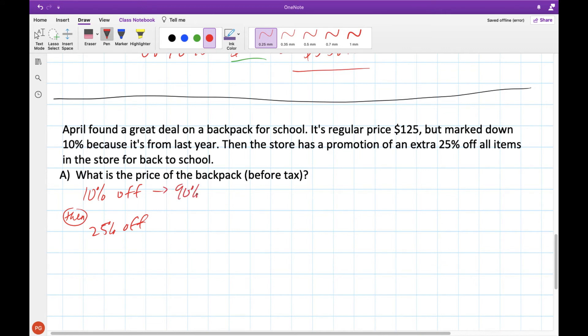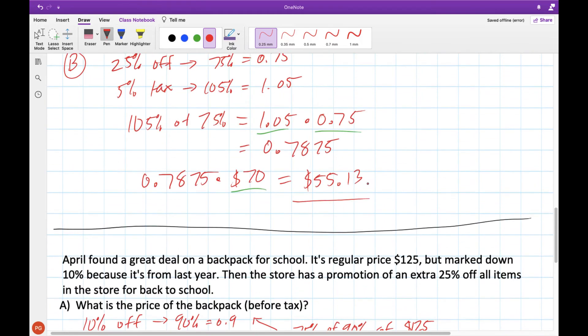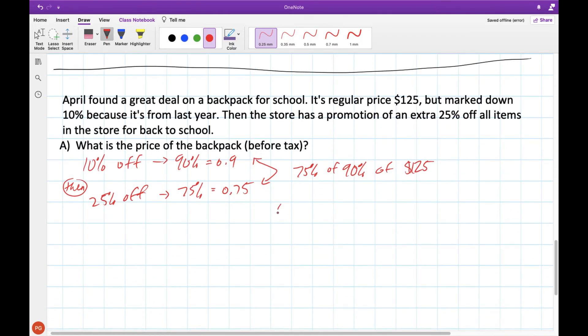10% off, that's like paying 90%, which is the same as 0.9. And 25% off, that's like 75%, 0.75. So together, what these would do is take off 75% of 90%. And that's being taken off of $125. So if we wanted to do this very similar to our last one here, but all in one step, we would do 0.75, so 75% of our backpack that was already marked off for 10%. So that's 0.9, times the original price of $125. If we punch all of that into our calculator, we would get $84.38.